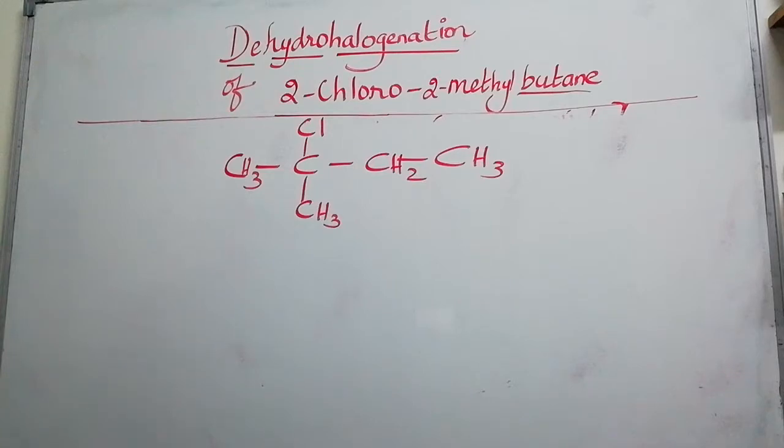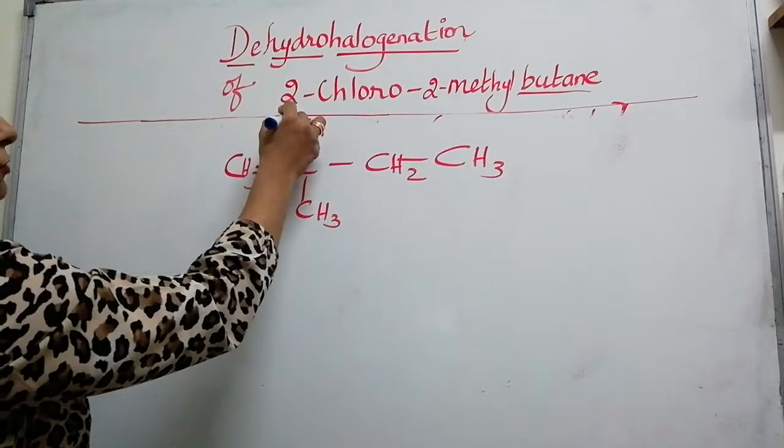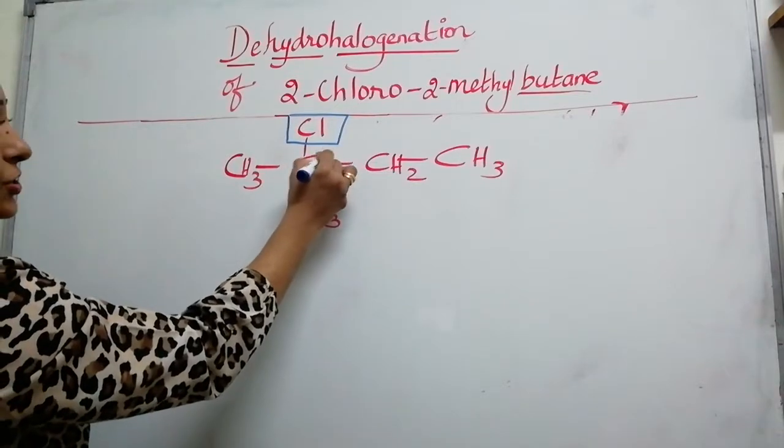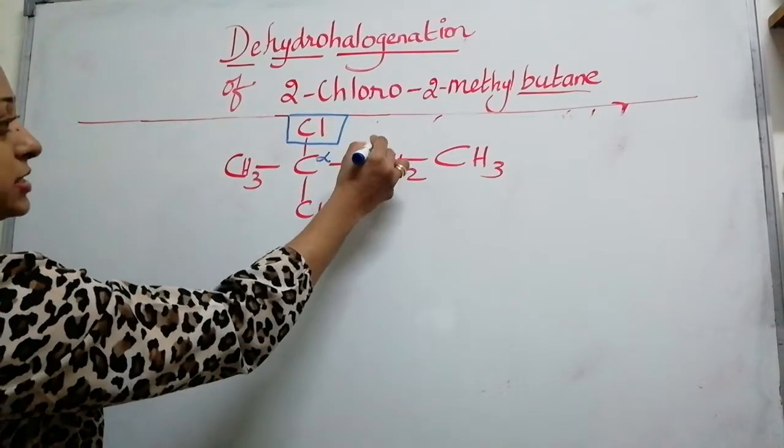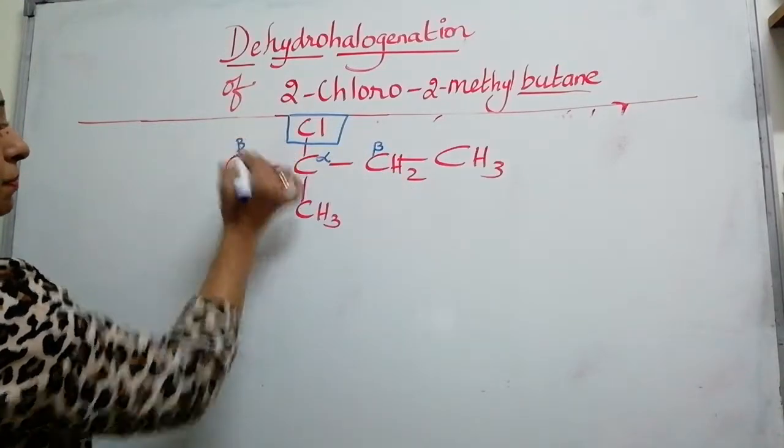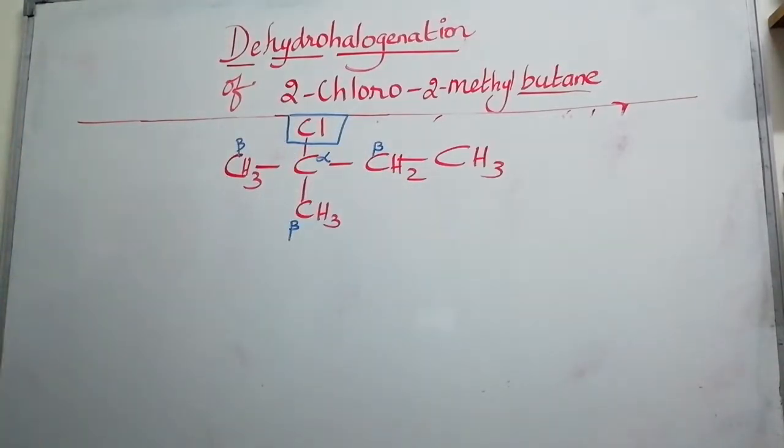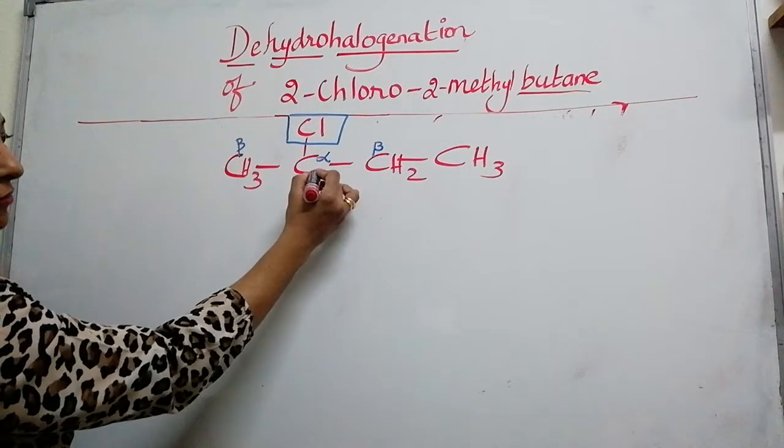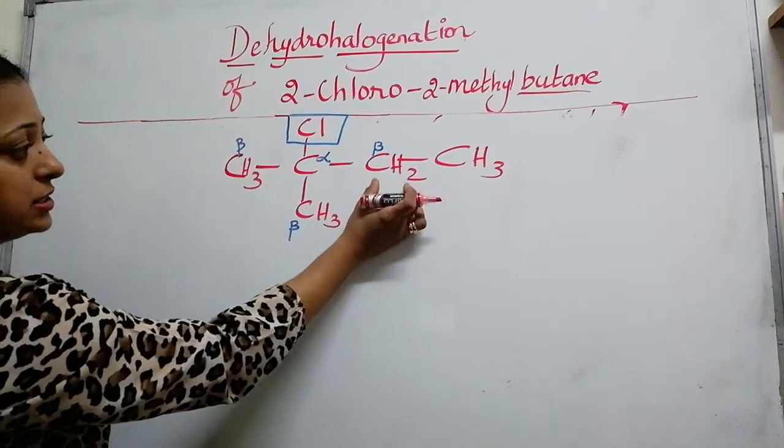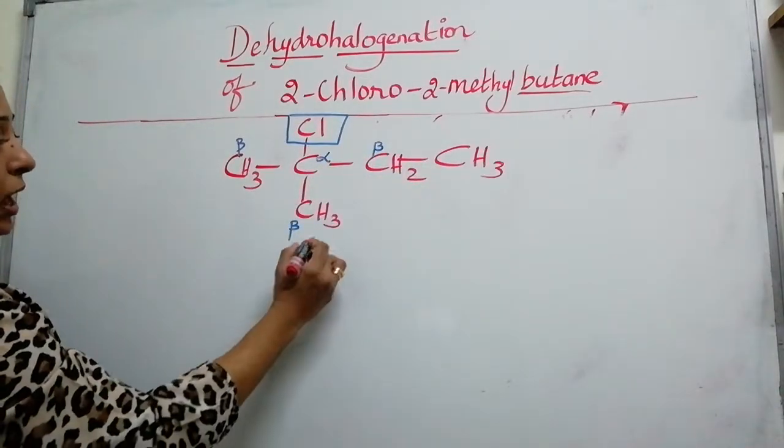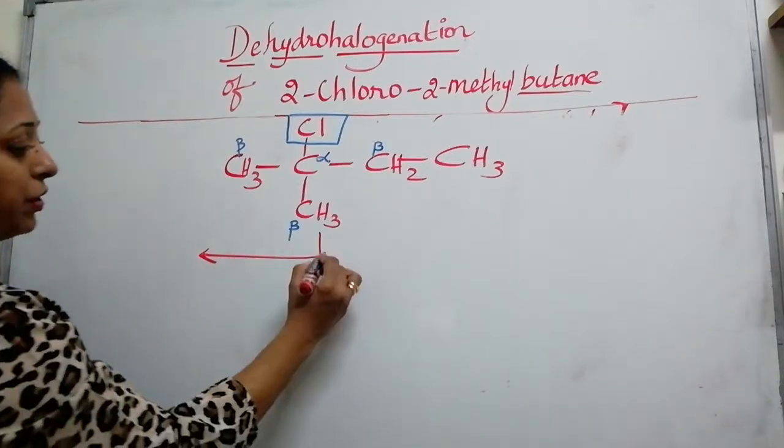The next step is identify the alpha position. The functional group is chlorine. The attached carbon is alpha. Adjacent positions that are adjacent to the alpha carbon, we have three beta carbons. If you really notice, these two beta positions have the same environment carbon whereas this beta position has two different environments. Therefore, I am going to get two products here.